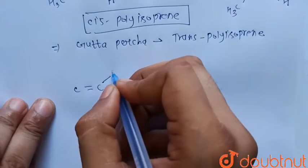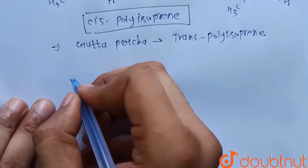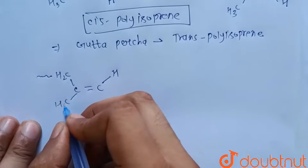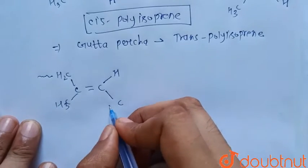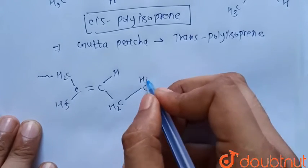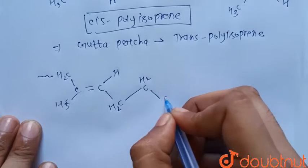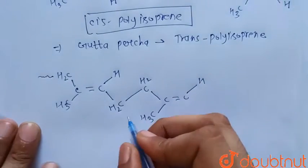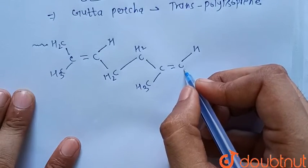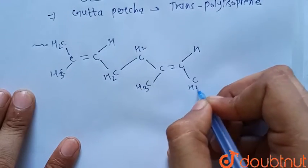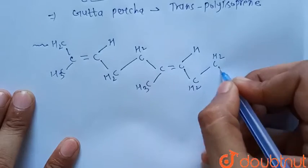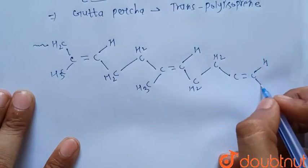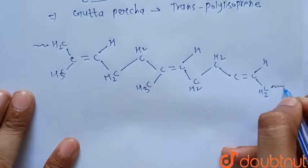C double bond C, H, CH3, and this is polymerized CH3, CH3, C double bond C, H, CH3.